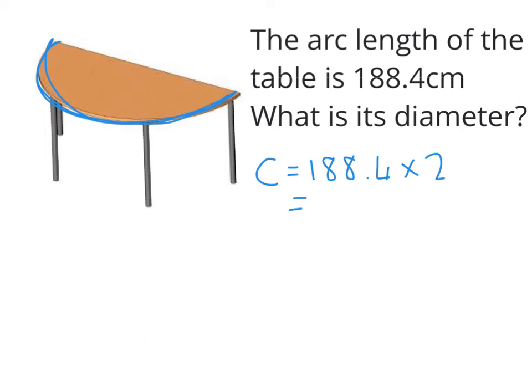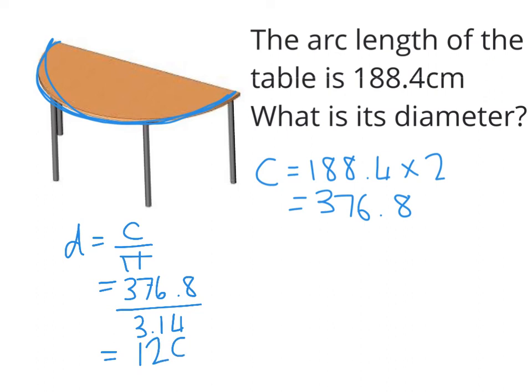So to get our diameter, remember, we're doing our diameter equals circumference over π. So we put that number over the π, not the 188, because that's only half of the circle. So we double it first to get the full circle, and then we divide it by 3.14. And if you do that, it should give you an answer of exactly 120. So the diameter of this table is 120 centimeters. So that's what's classed as an extension question.